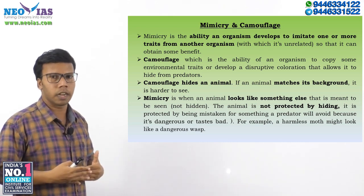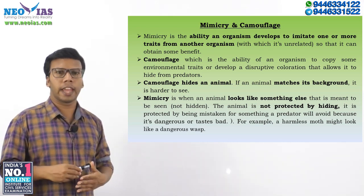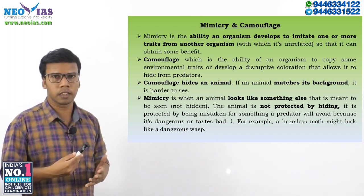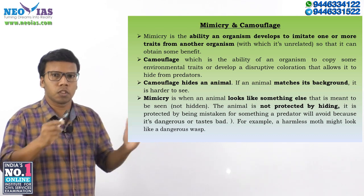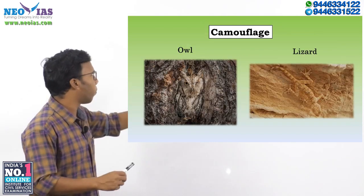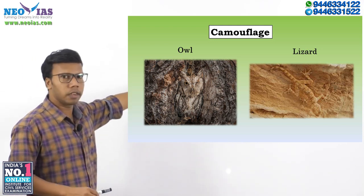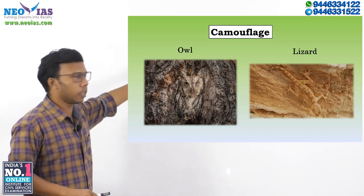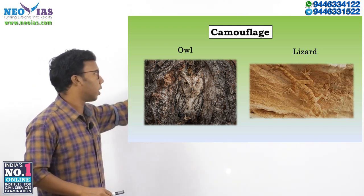You may have heard about the color-changing of the chameleon — that is an example of camouflage. If an animal matches its background, it is harder to find. Here you can see two examples of camouflage. One is an owl standing inside a hole of a tree — you can see the owl and its eye there.